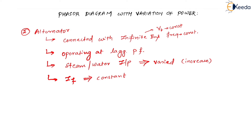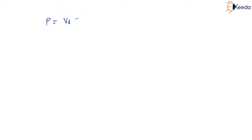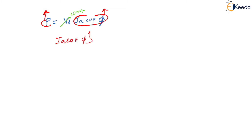When steam or water power input is varied, it is active power that changes. We know that power P = Vt · Ia · cosφ. Since Vt is constant (infinite bus), if power increases then Ia · cosφ must increase. This is a very important point.